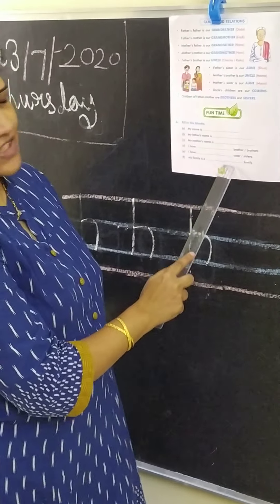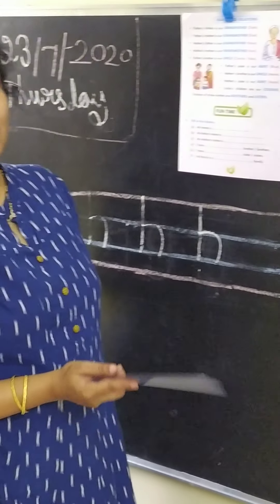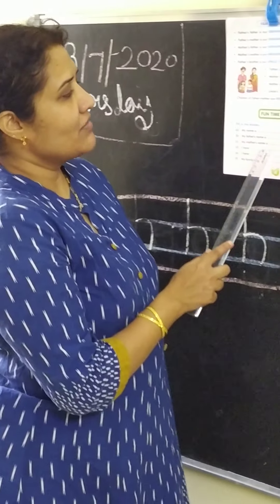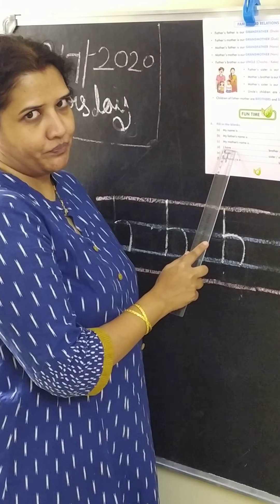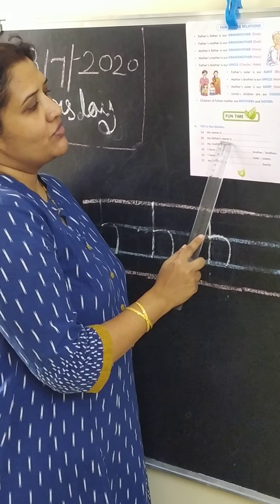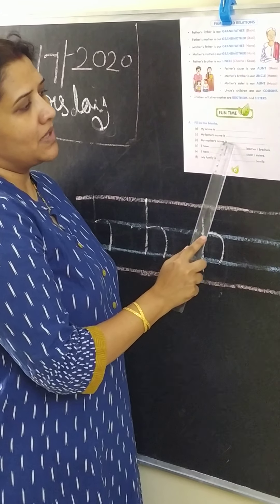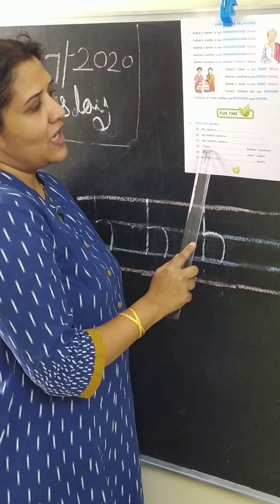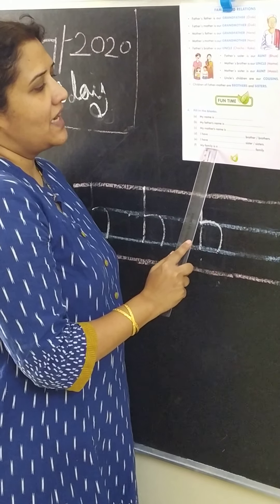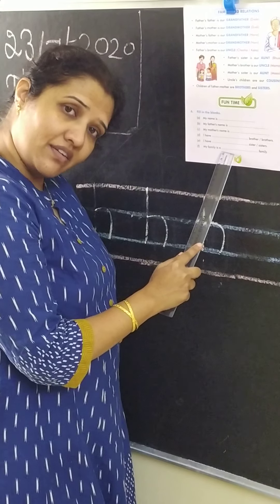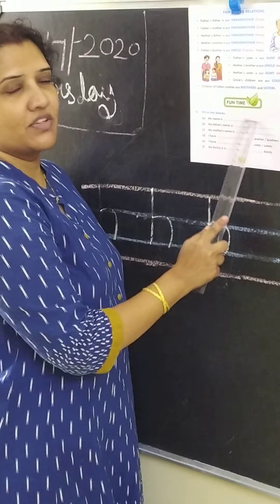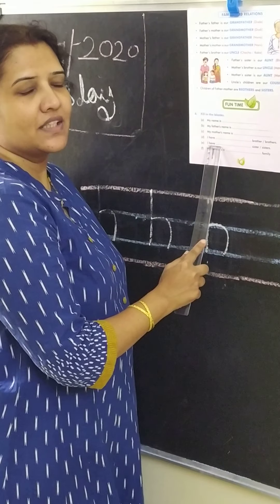Now that we have seen all the relations — joint family, small family and large family — we have to complete this activity. My name is dash. You have to write your father's name, mother's name, then how many brothers you have, how many sisters you have, and whether yours is a big family, small family or joint family. You have to finish this activity. Thank you.